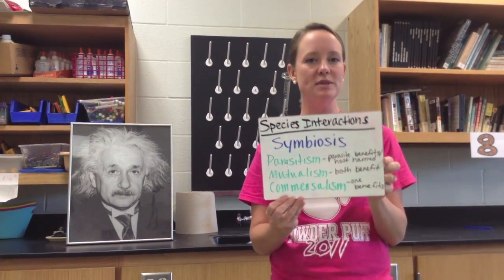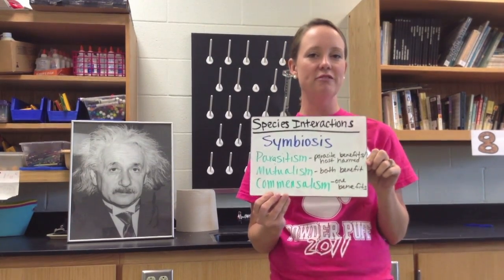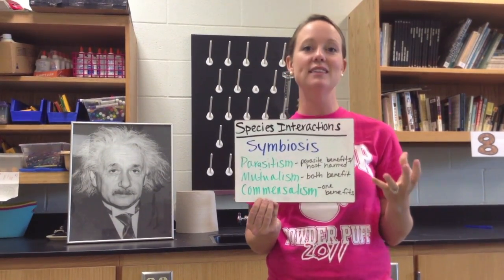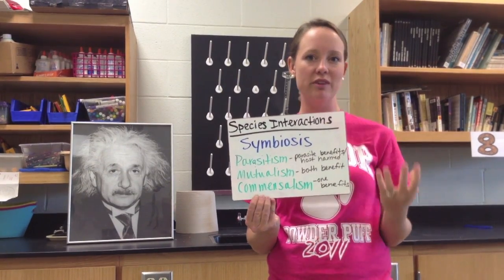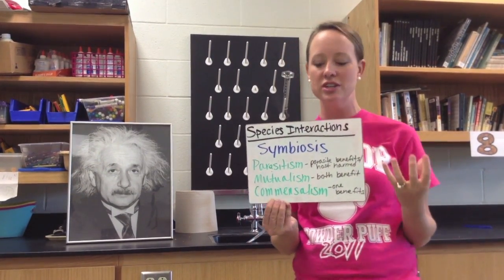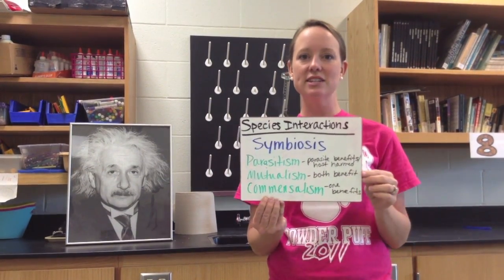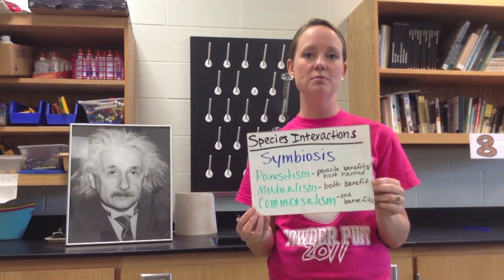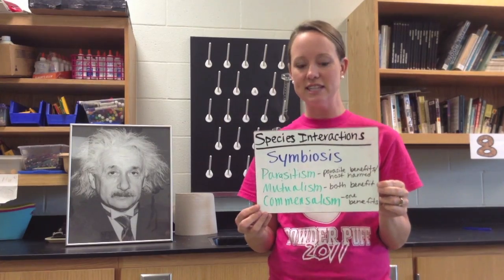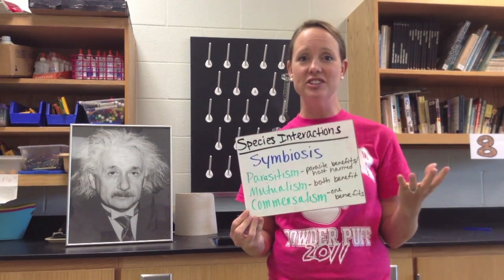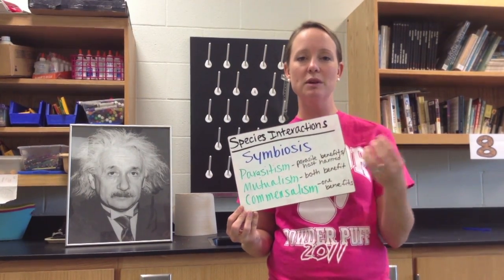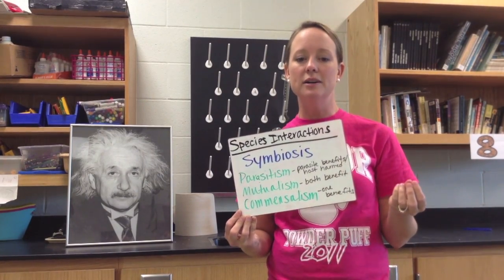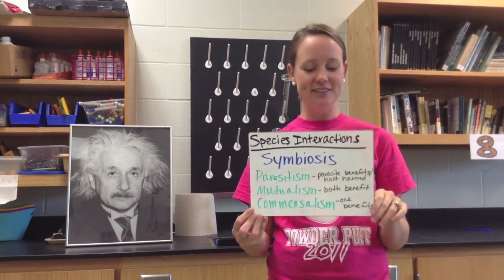Mutualism is when both species benefit. If you've seen Finding Nemo, consider the relationship between the sea anemone and the clownfish — the sea anemone provides protection, and the clownfish eats some of the bacteria that lives on the sea anemone. Lichens are a mutualistic relationship where an algae and a fungus live together. Pollination is another example — spreading pollen helps the plants grow, and it also helps the bees make honey.